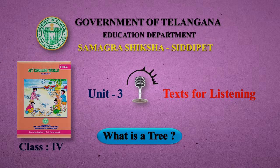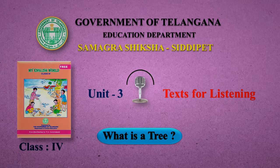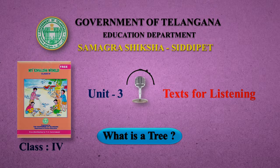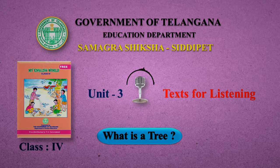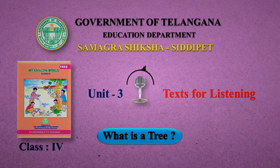Then Sujata teacher stuck a lot of small leaves on the branches. Those are leaves, said the children. This is a tree, said Sita.